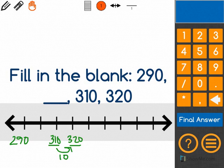That means that for whatever this number is, I also have to follow the same rule. So from 290, I have to go up by 10. I know that 290 plus 10 is 300.